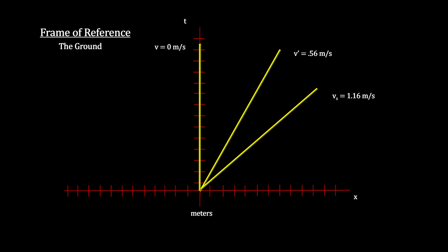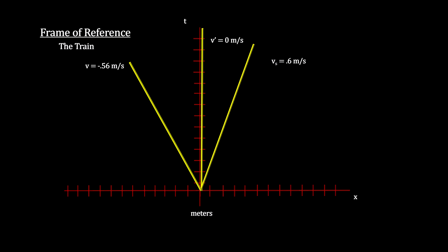If we put this on our space-time graph, we see the train moving as the inertial frame velocity V prime and the person walking with the velocity 1.1 meters per second. Now just rotate the velocity lines to make the train standing still.